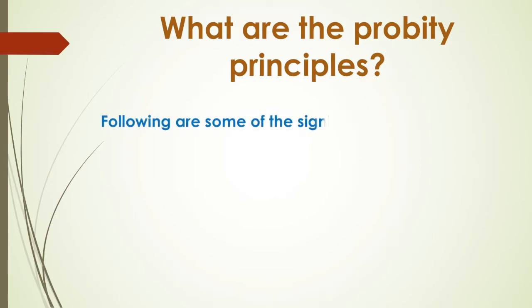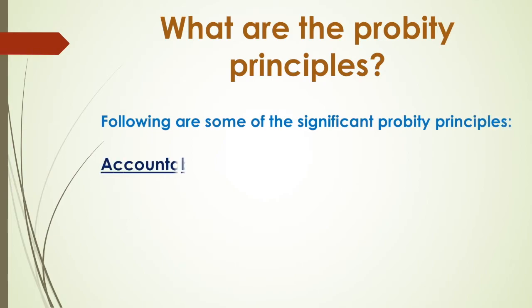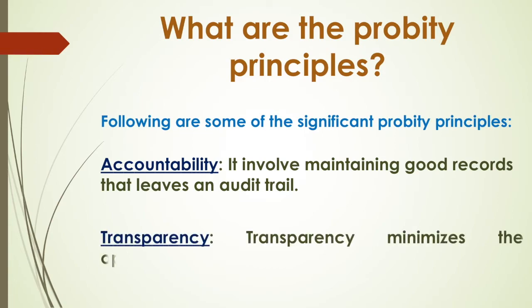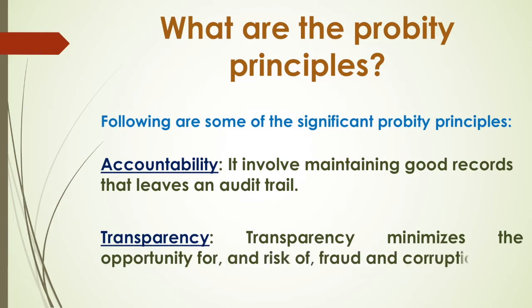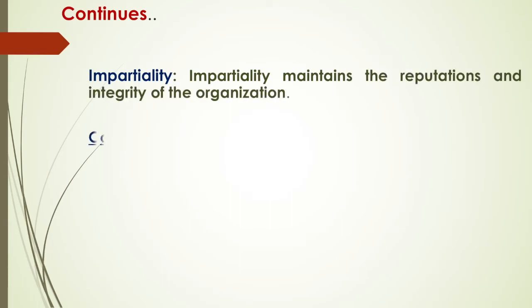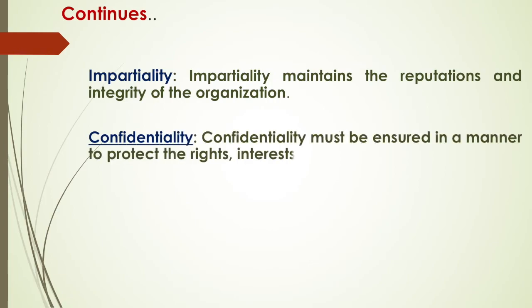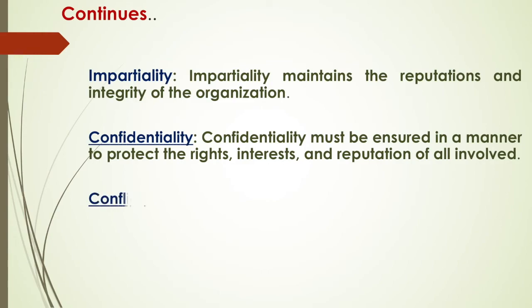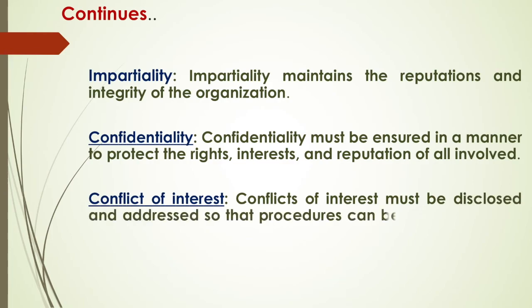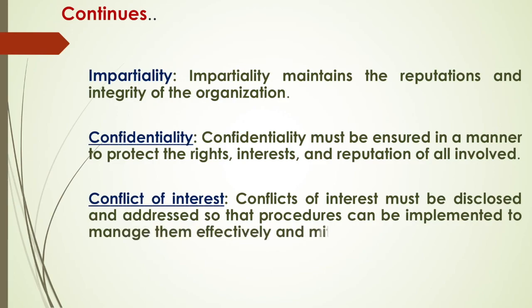The next question is: what are the probity principles? Following are some of the significant probity principles. Accountability — it involves maintaining good records that leave an audit trail. Transparency — transparency minimizes the opportunity for and risk of fraud and corruption. Impartiality — impartiality maintains the reputation and integrity of the organization. Confidentiality — confidentiality must be ensured in a manner to protect the rights, interests, and concerns of all involved. Conflict of interest — conflicts of interest must be disclosed and addressed so that procedures can be implemented to manage them effectively and mitigate the impacts.